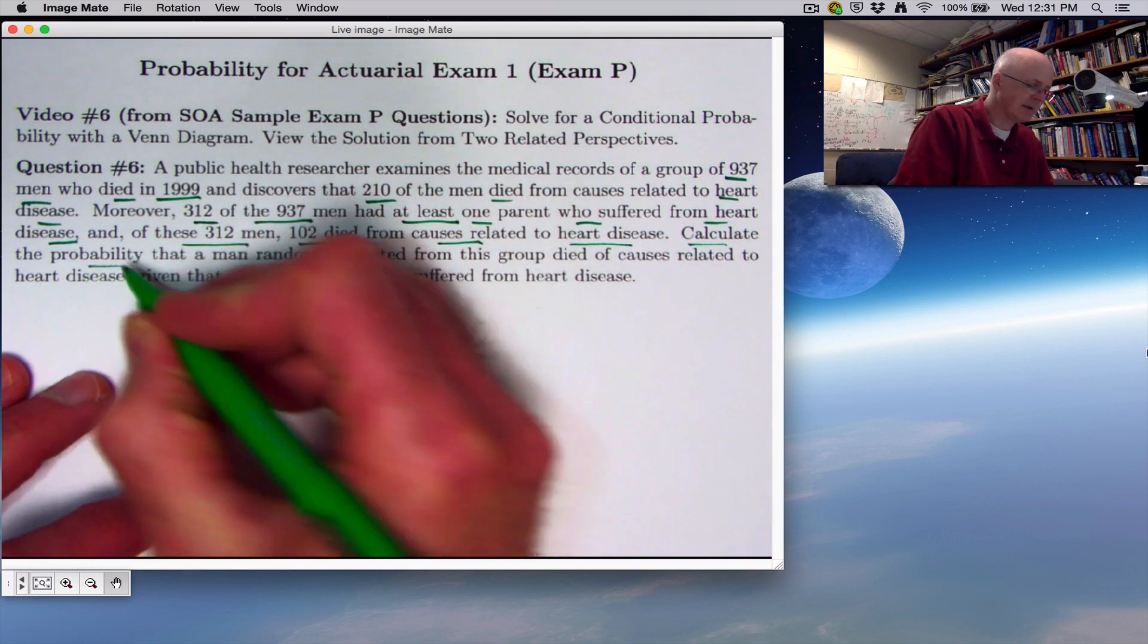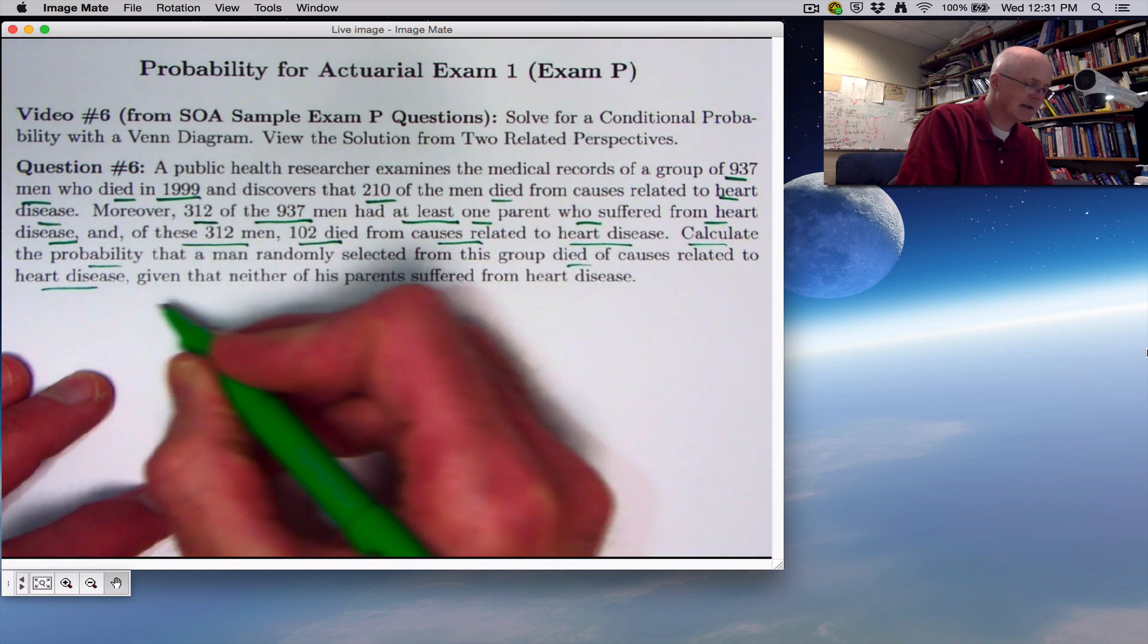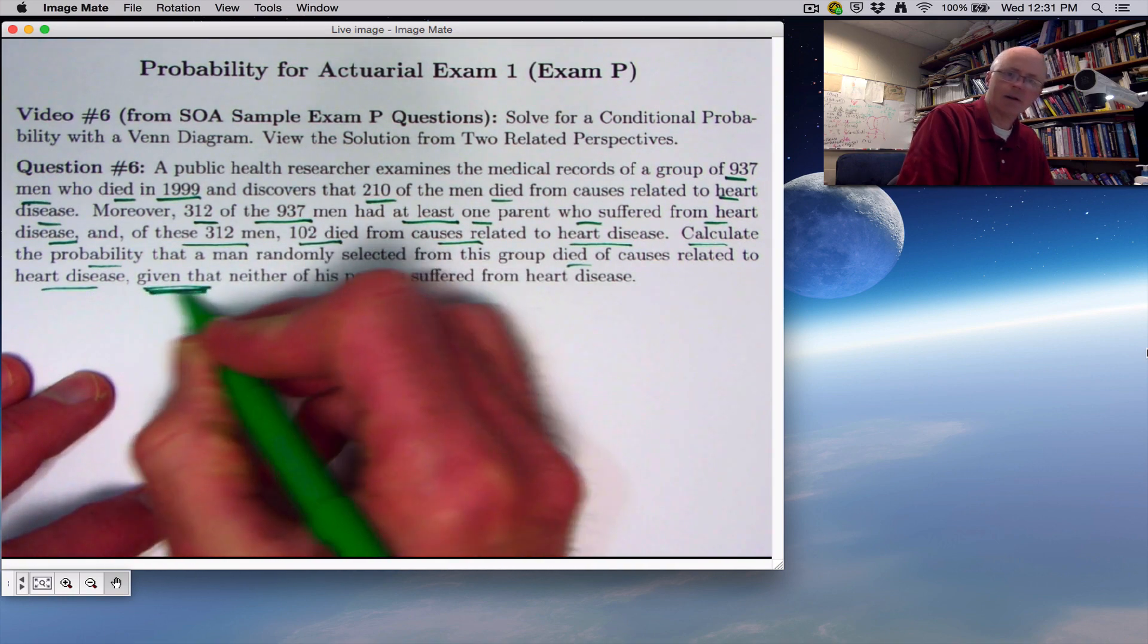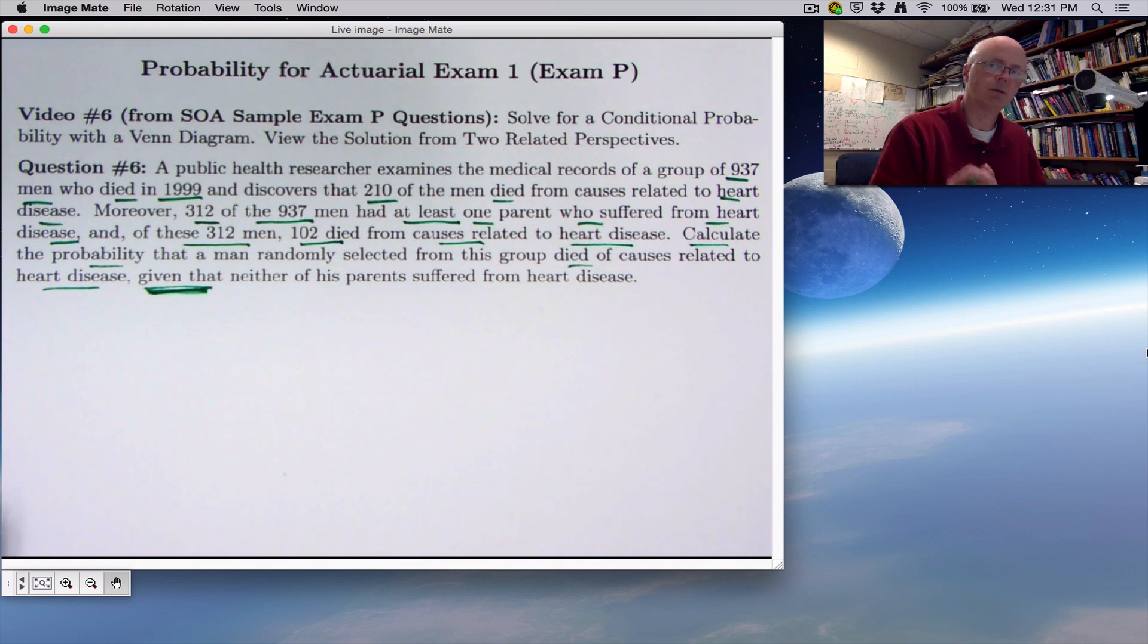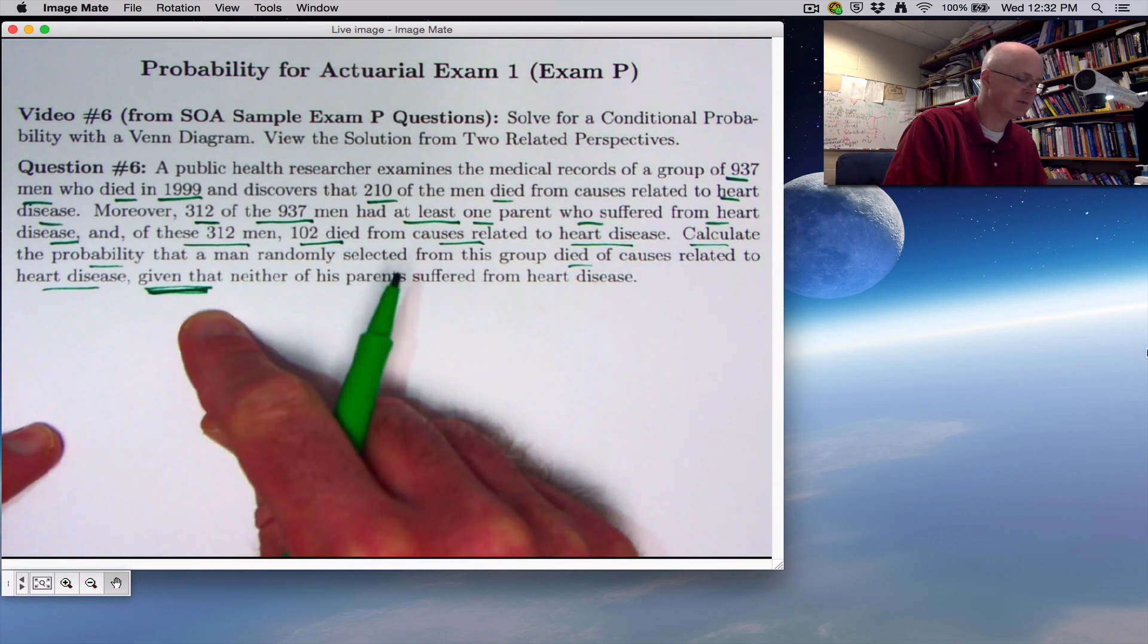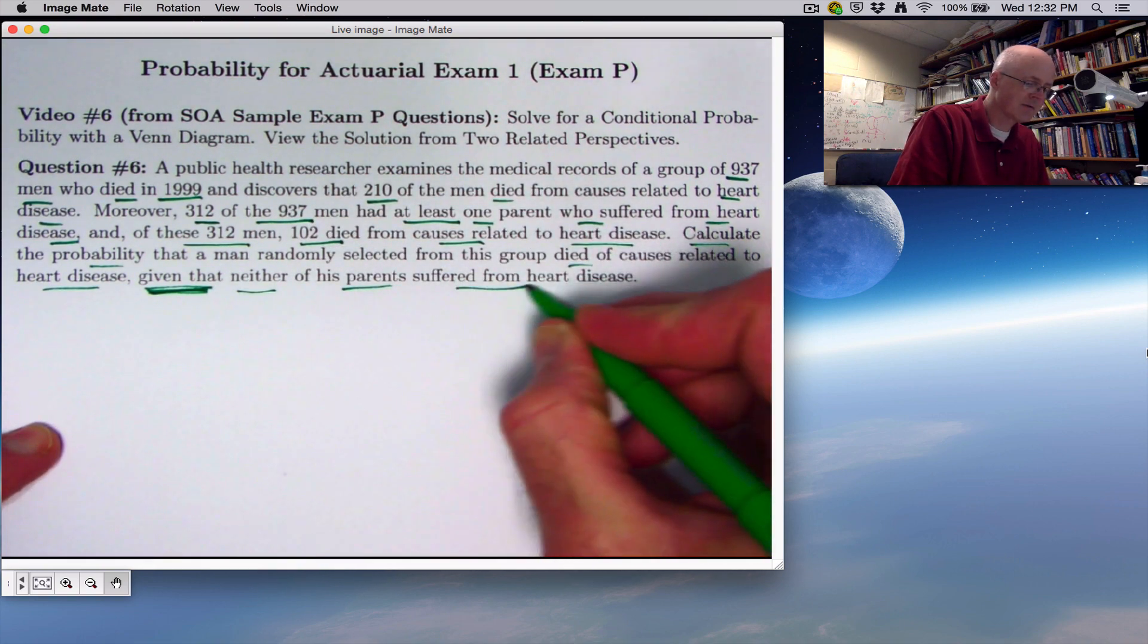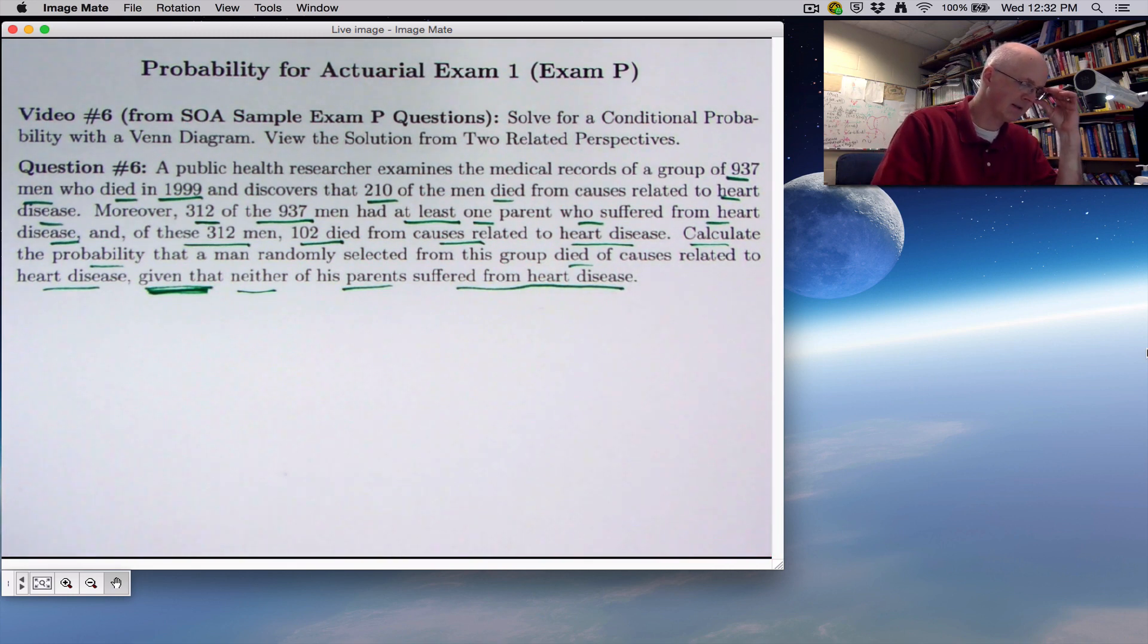Our goal is to calculate the probability that a man randomly selected from this group died of causes related to heart disease, given that neither of his parents suffered from heart disease. 'Given that' - there's your key phrase that tells you you want to compute a conditional probability. You don't see the word conditional in this problem statement at all. So you need to look for phrases like 'given that,' 'if it is known that,' or 'if you assume that.' Again, we aren't worried about whether the parents died or not from heart disease.